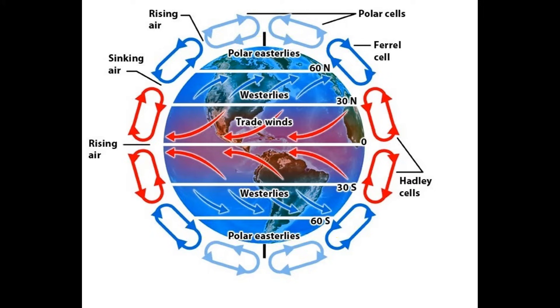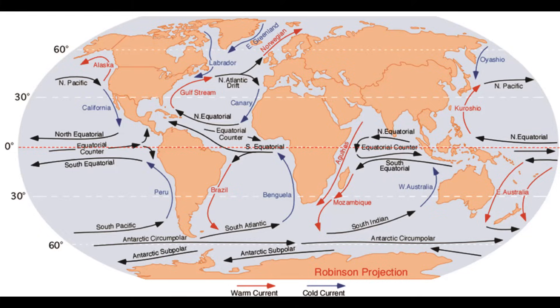In between these regions are the global wind belts. Finally, ocean surface currents circulate warm and cold ocean waters in convection patterns and influence the weather and climates of the land masses nearby.